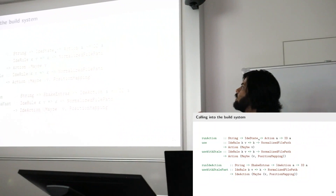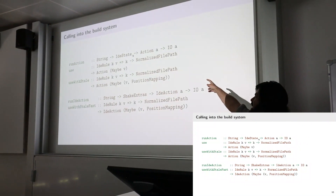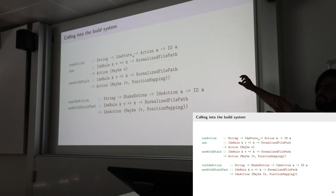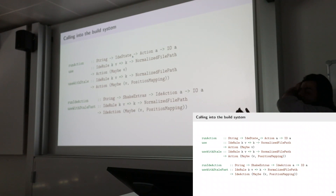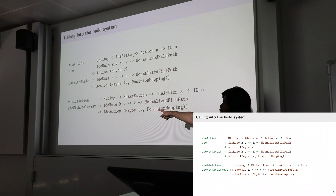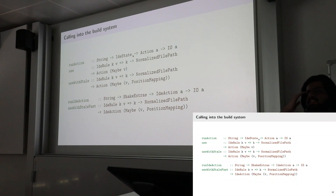We also have useWithStale which looks almost exactly like use but gives you something called a position mapping. In addition to this action stuff which gives you a consistent snapshot into the state, you can also run things in an IdeAction — it does the same thing as useWithStaleFast but things in IdeAction don't have access to all of the compiler state, can't trigger rebuilds, and are faster in some sense.